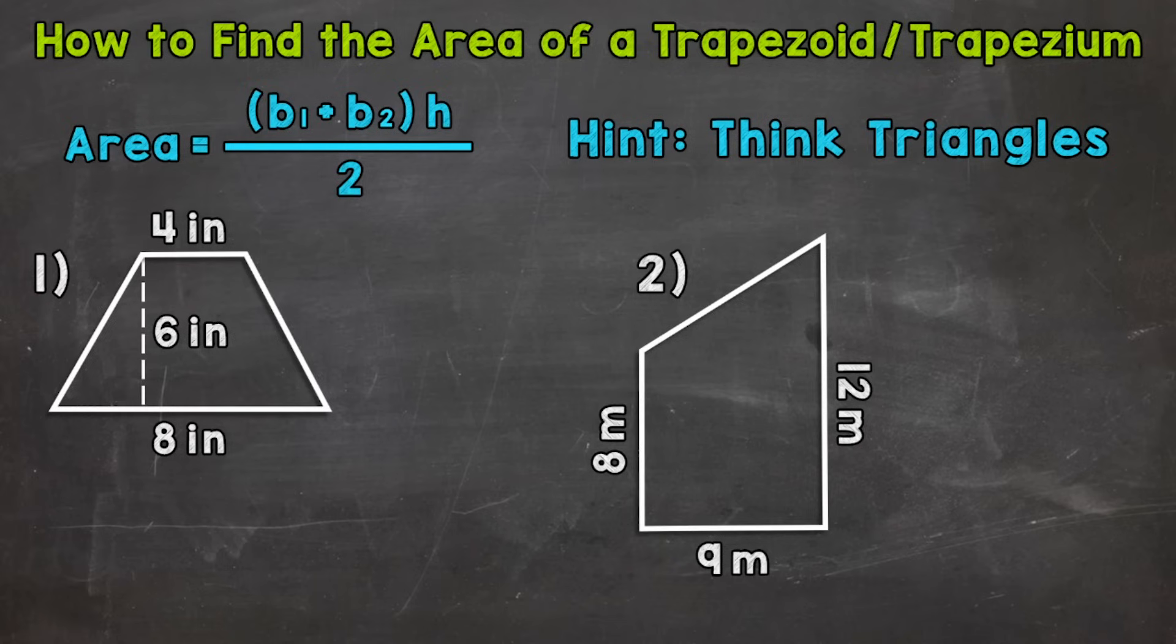Now when we're talking trapezoids, the bases are going to be the parallel sides. It doesn't matter if it's the top, bottom, side, or other side. It matters which sides are parallel. Those are your bases. The other sides, which are not parallel, those are called the legs.